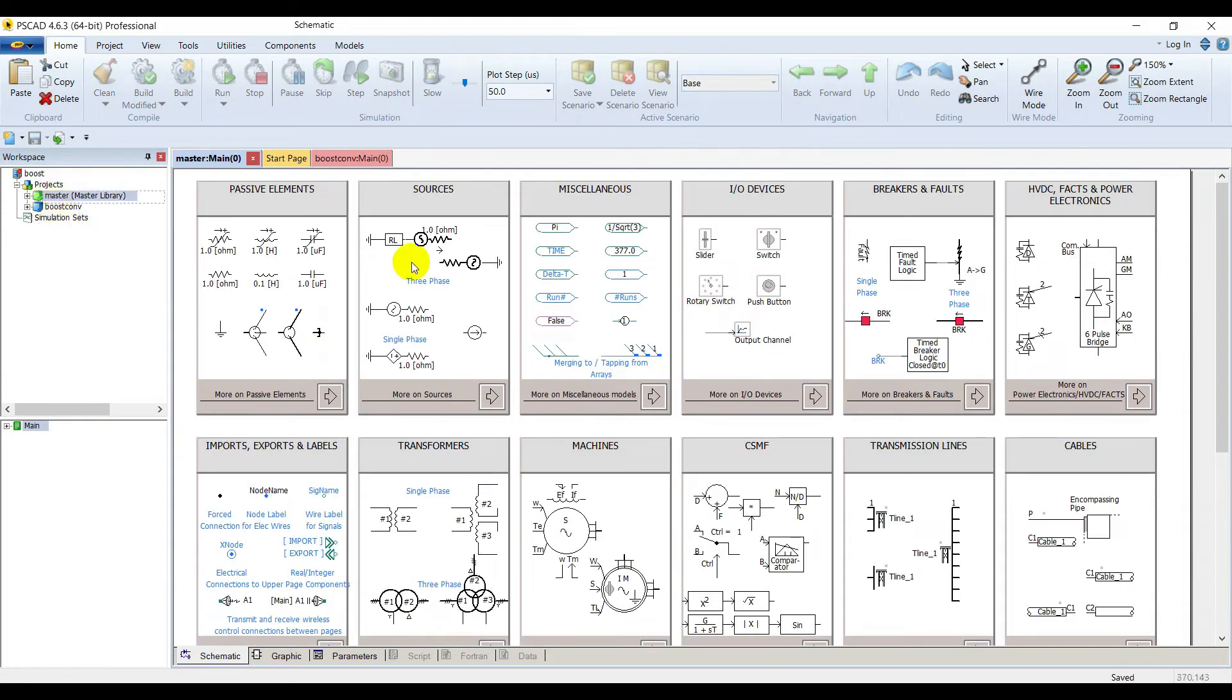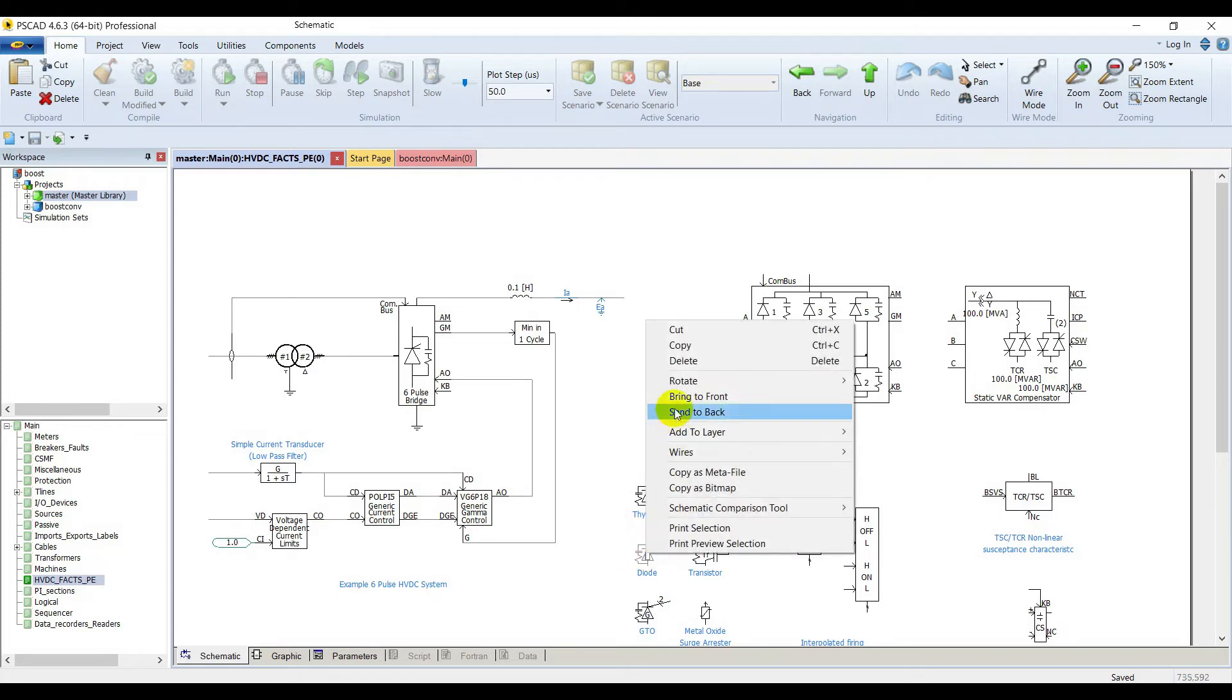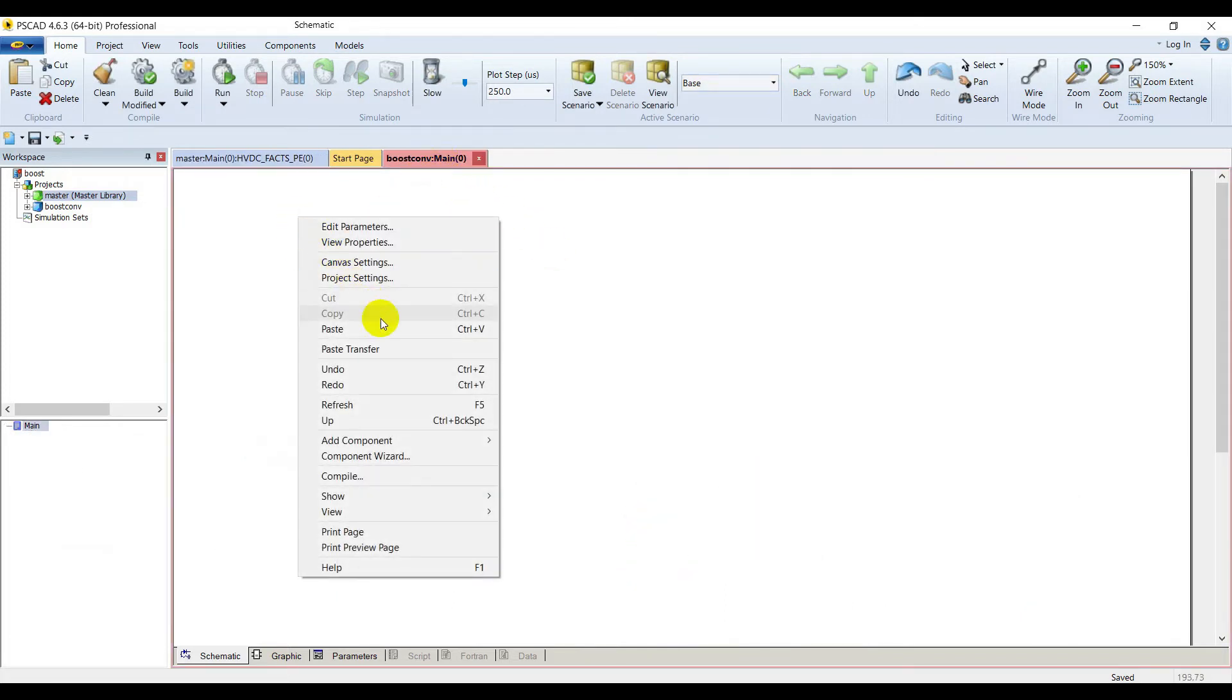Go to master library, go to HVDC facts library. We are going to need an IGBT and a diode from here. Copy them and paste them.